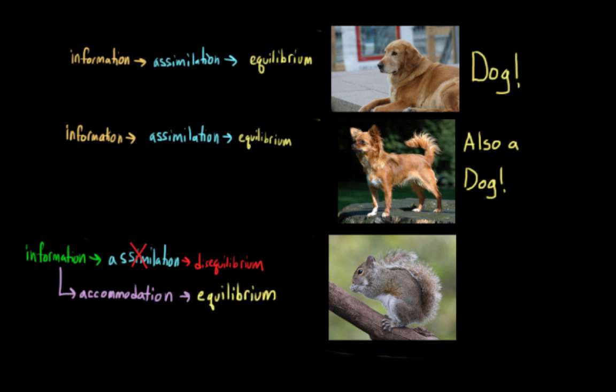And then maybe later you come across yet another creature. And first you try to assimilate this information. It has four legs. It has ears. It has two eyes. It has a tail. It's a dog. But then maybe you notice that other people around you aren't treating this creature like a dog. It's not acting like the other dogs that you see in a park. And so you start to wonder, maybe, maybe this isn't a dog. And now you're in a state of disequilibrium.